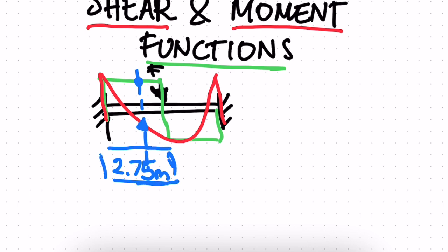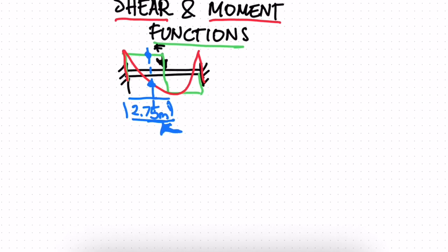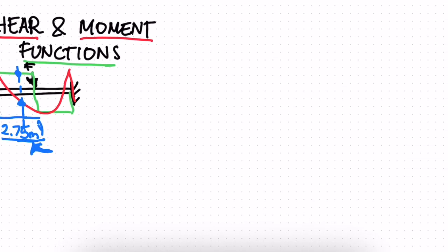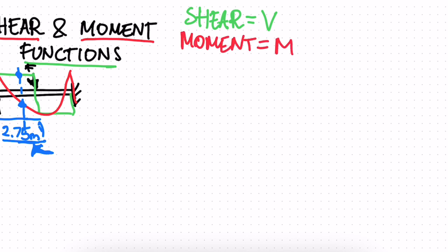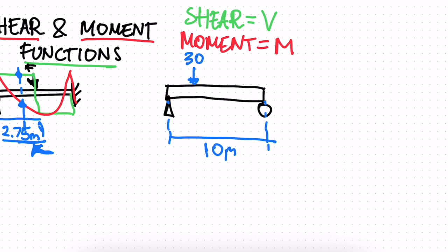We can develop a formula where we just plug in the distance and get those values. We're going to look at some examples and develop these functions. We denote shear as V and moment as M. We'll have a beam with a pin and roller support — a 10-meter beam. There's a point load of 30 kilonewtons acting 3 meters along the beam, and another point load of 50 kilonewtons acting 5 meters from that point, making 8 meters total, with 2 meters remaining.